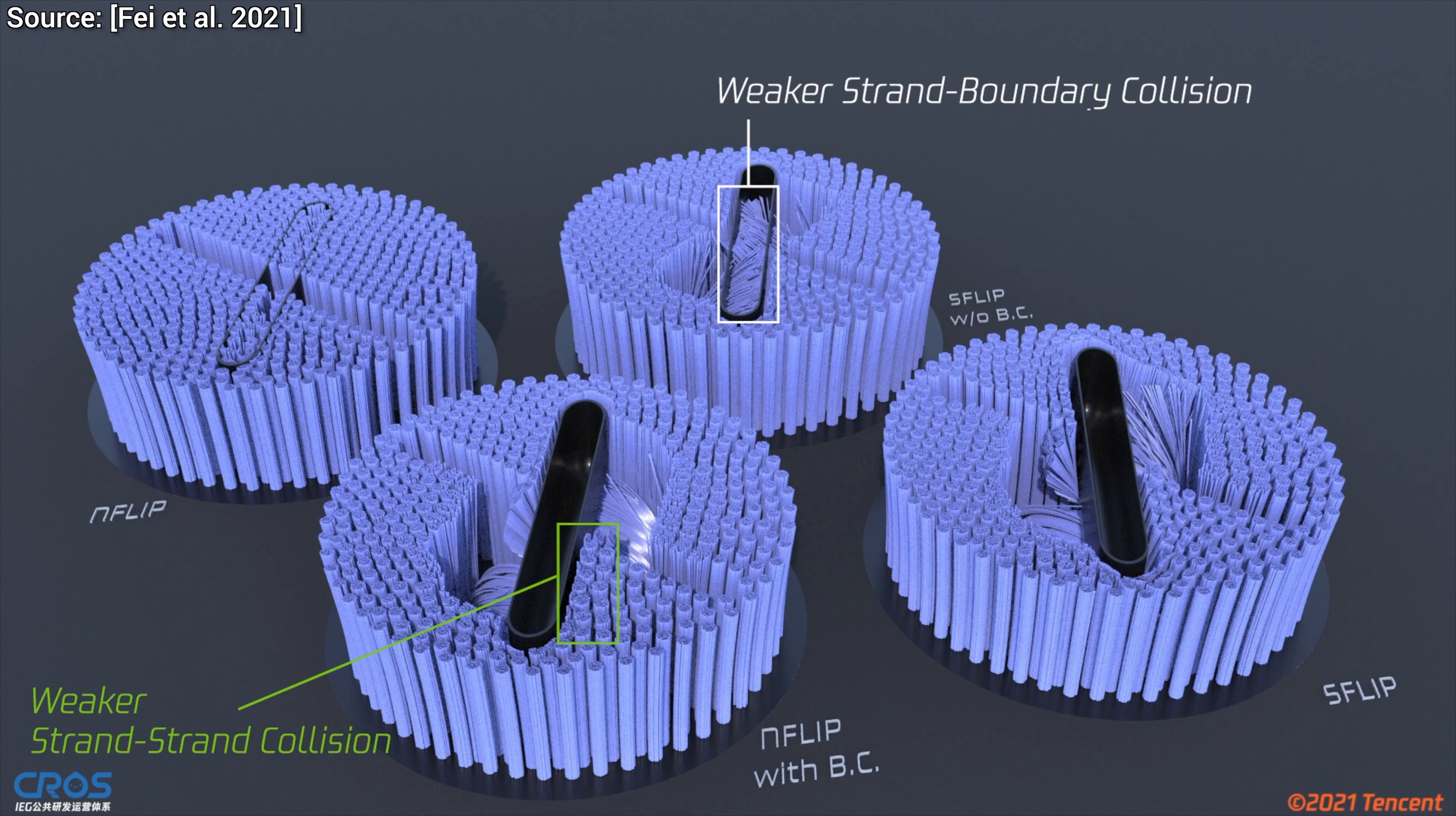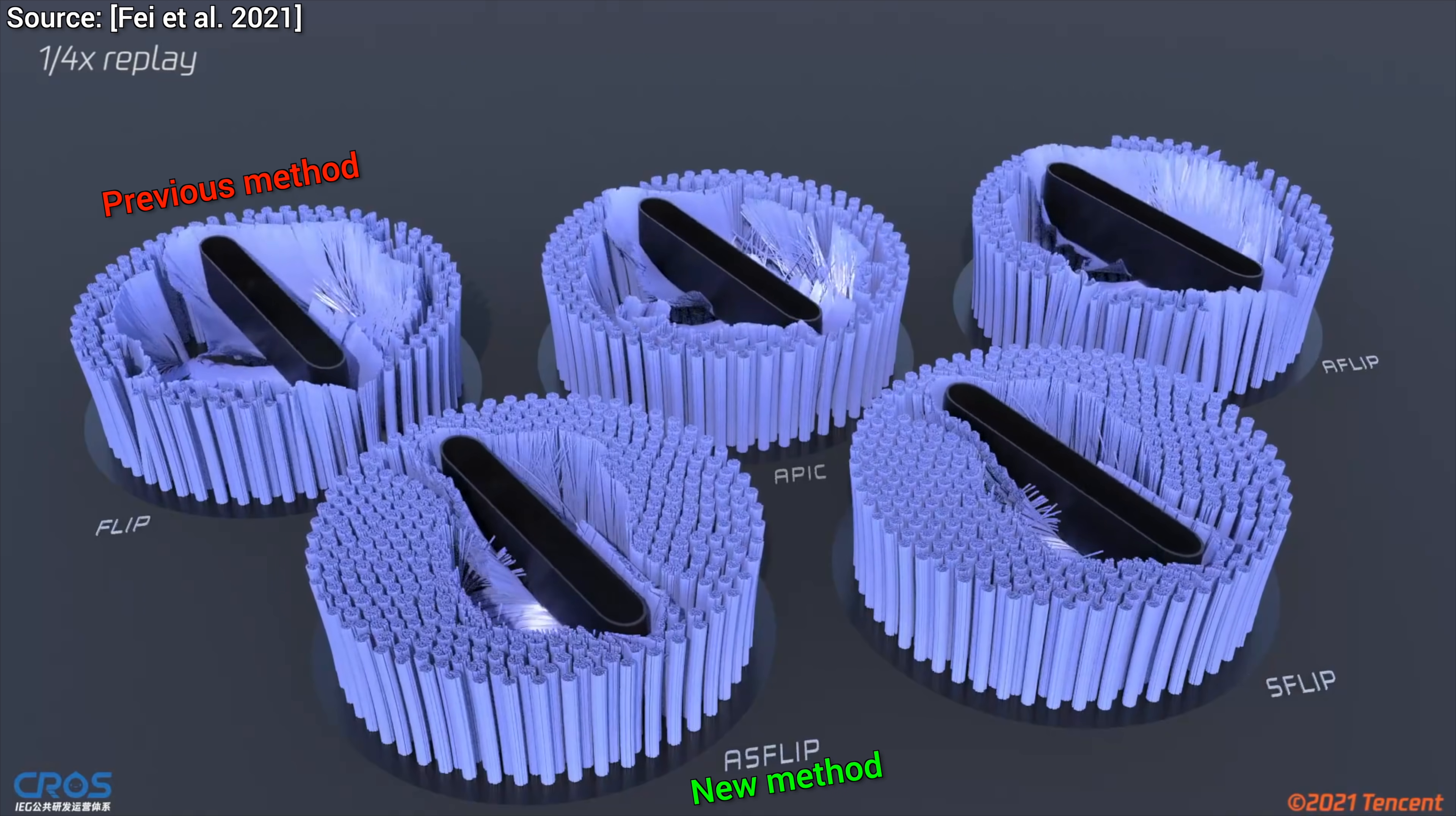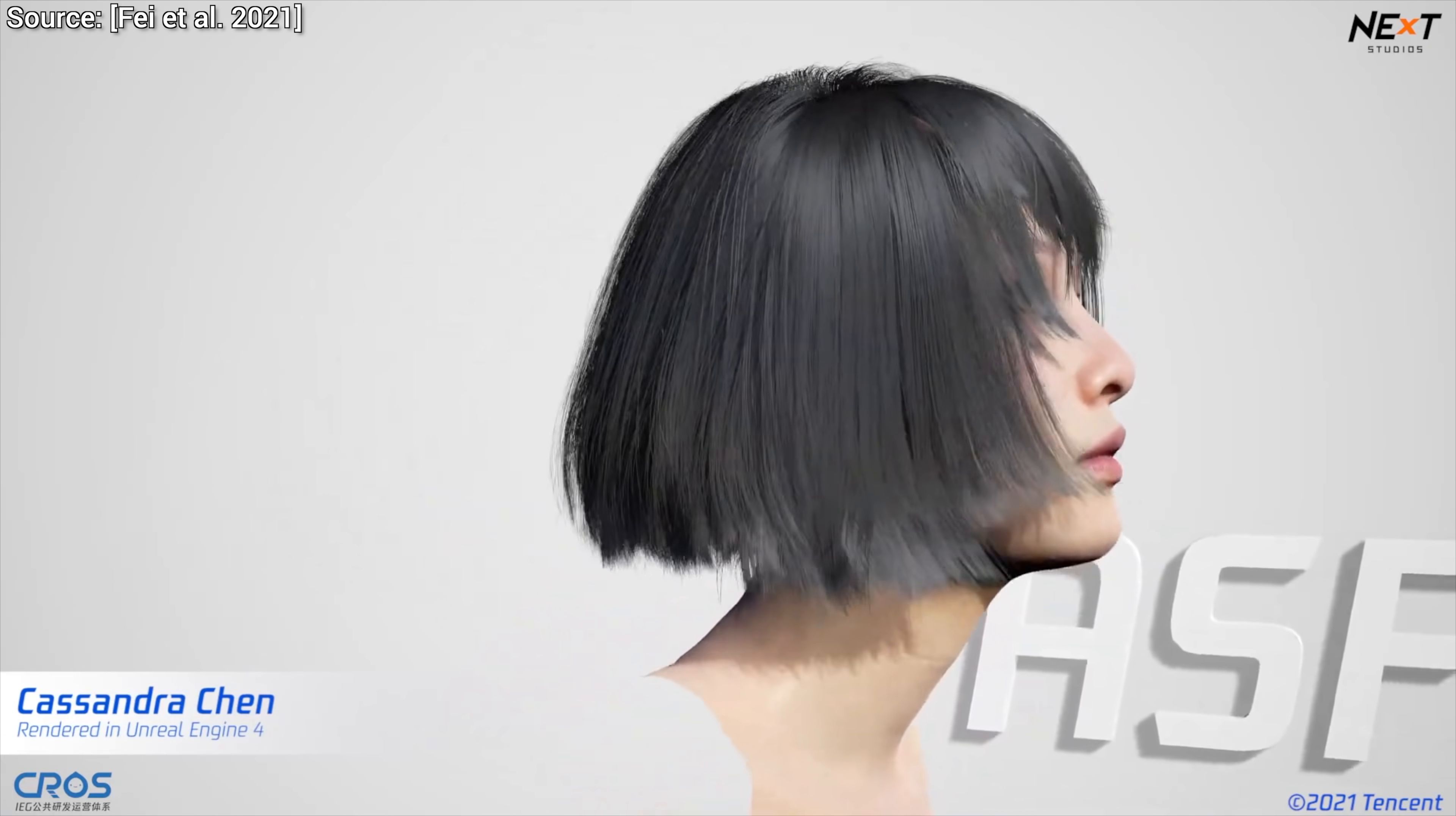So, if it can simulate the movement and intersection of short strands better, does that mean that it can also perform higher quality hair simulations? Oh yes, yes it does. Excellent.